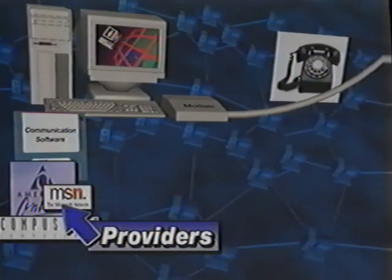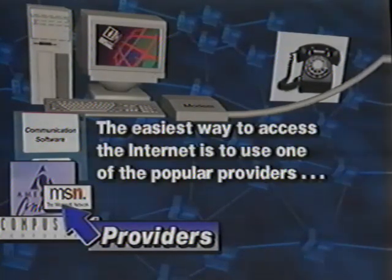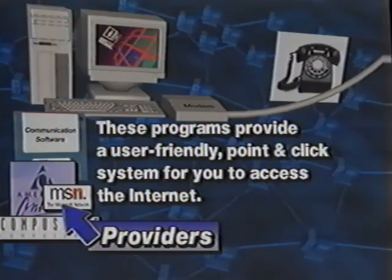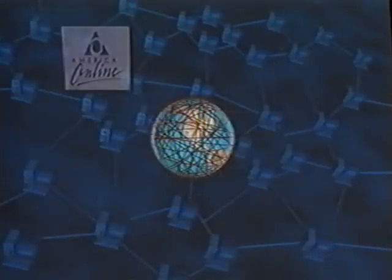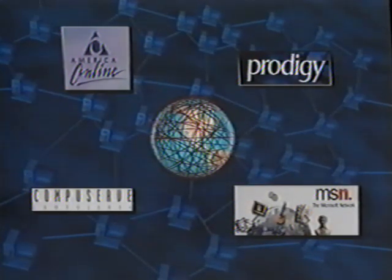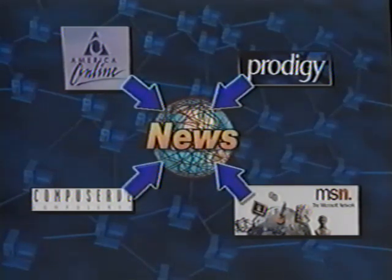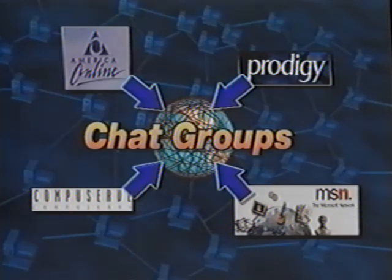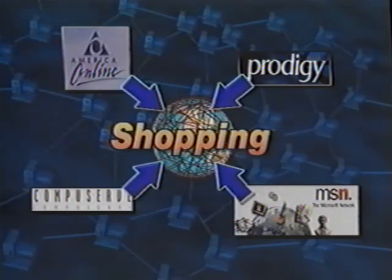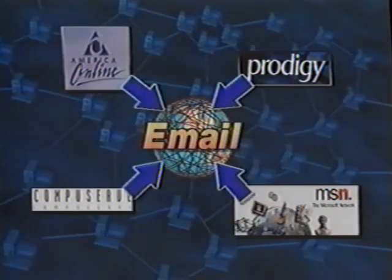There are several ways to access the internet and the easiest is to use one of the most popular providers such as AOL, Prodigy, CompuServe, or Microsoft Network. These programs are geared to provide very user-friendly point-and-click systems for you to access the internet as well as many other areas of interest. You may want to do some research into what they have to offer to suit your needs. Each of these providers has their own format which includes many services and activities as well as access to the internet.